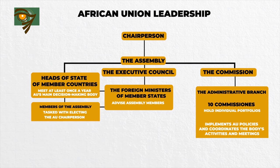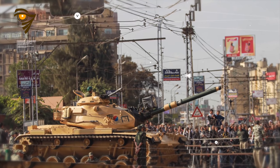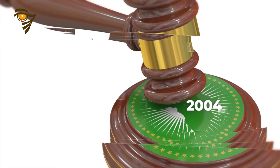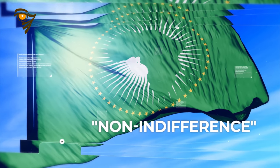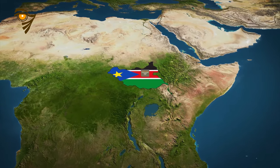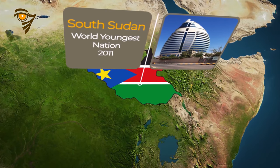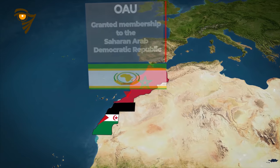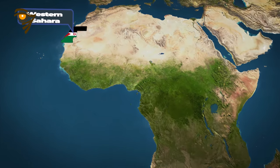Finally, there is the Commission, the administrative branch comprising 10 commissioners who hold individual portfolios. The Commission implements AU policies and coordinates the body's activities and meetings. The AU set about distancing itself from the OAU by often suspending countries where coups take place and readmitting them when they return to constitutional rule. To this end, it set up a Peace and Security Council in 2004, which may intervene in conflicts, replacing the old OAU principle of non-interference with one of non-indifference. South Sudan became the 54th member state when it became the world's youngest nation in 2011.